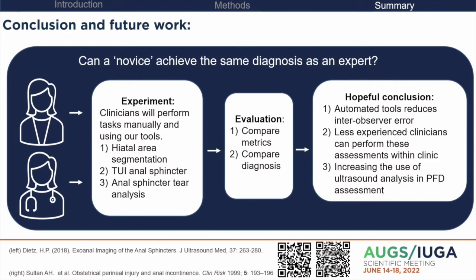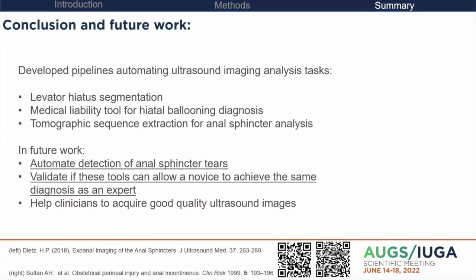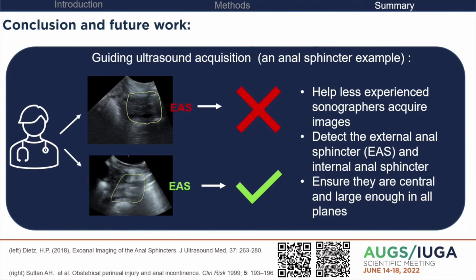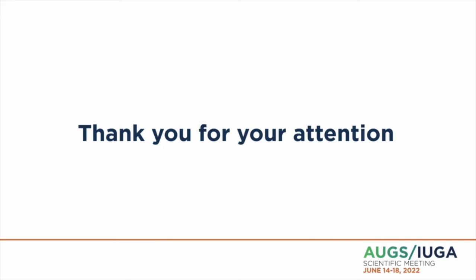Finally, I also want to help clinicians acquire good quality ultrasound images — this is key to both automatic and manual analysis. For example, in anal sphincter imaging, we can use algorithms we've already created to locate the external anal sphincter and ensure it is in the center of the ultrasound image, of correct size, and not including artifacts. This would further increase the use of ultrasound imaging in clinics and improve the analysis process. Thank you very much for listening.